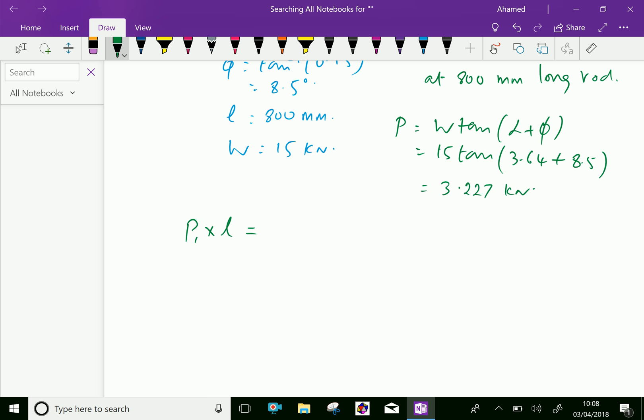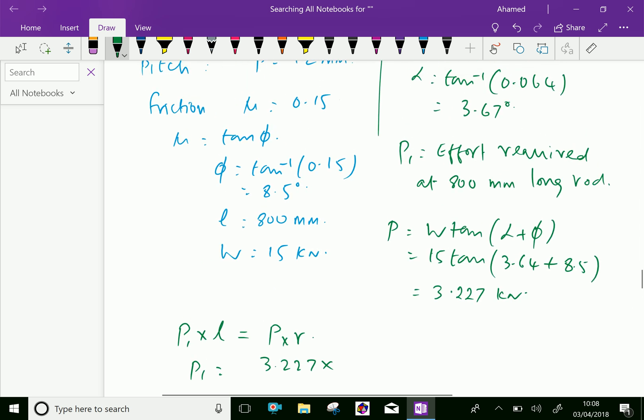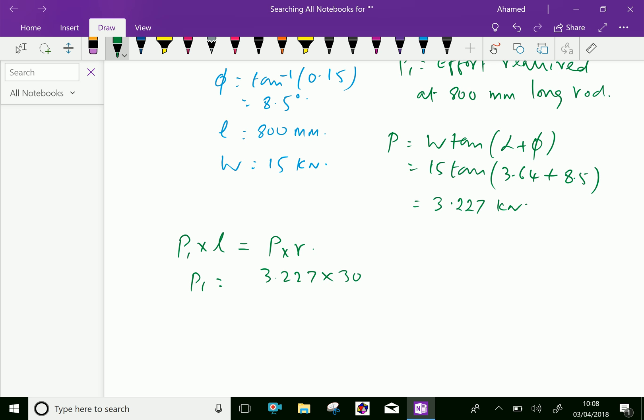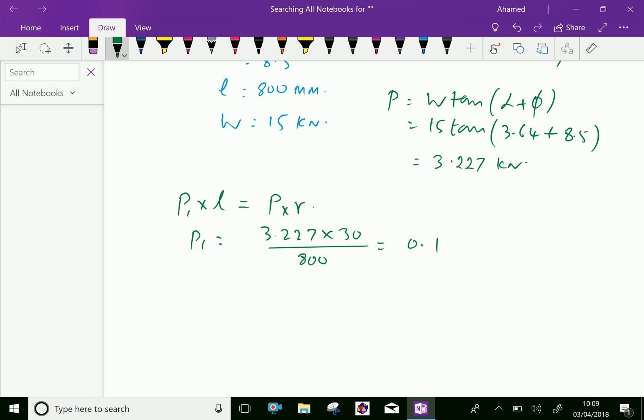Therefore, P1 equals P is 3.227, radius of the rod is 30 mm, over L is 800, which equals 0.121 kilonewton, which is equal to 121 Newton. This means the effort required at the end of the handle is 121 Newton.